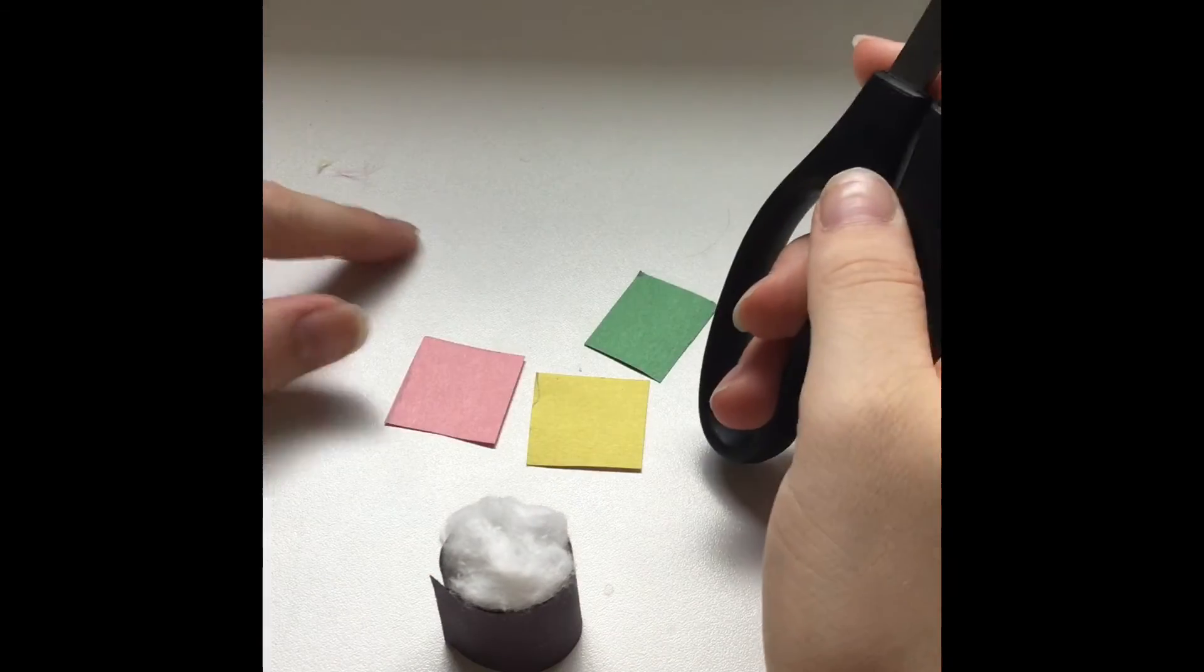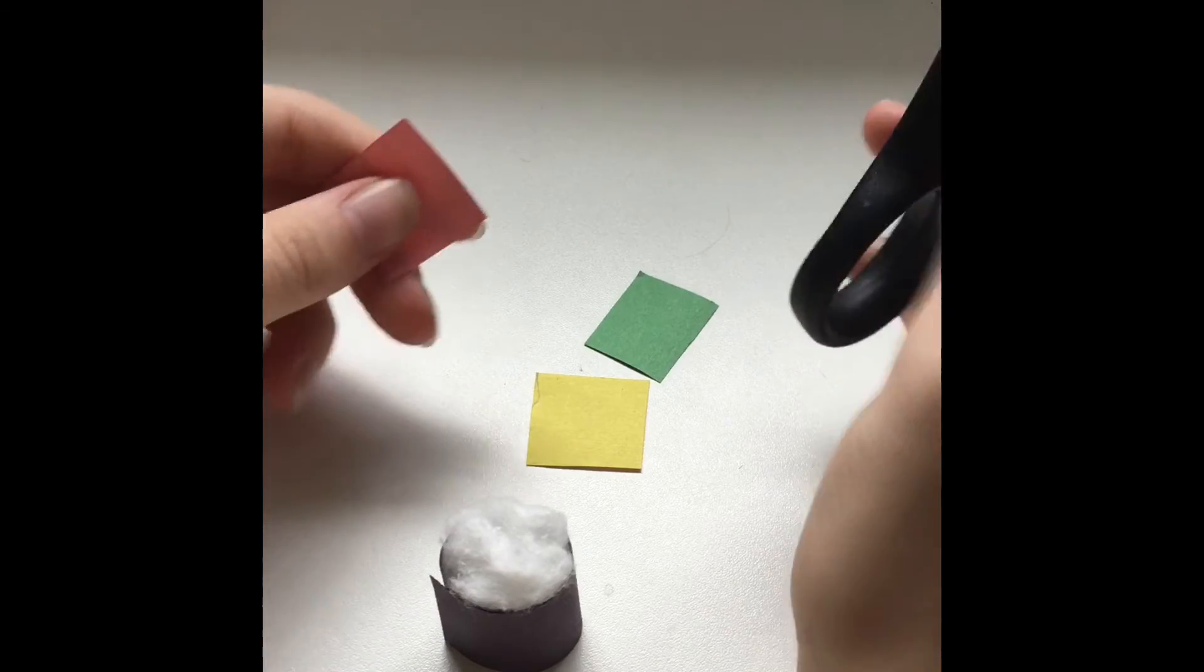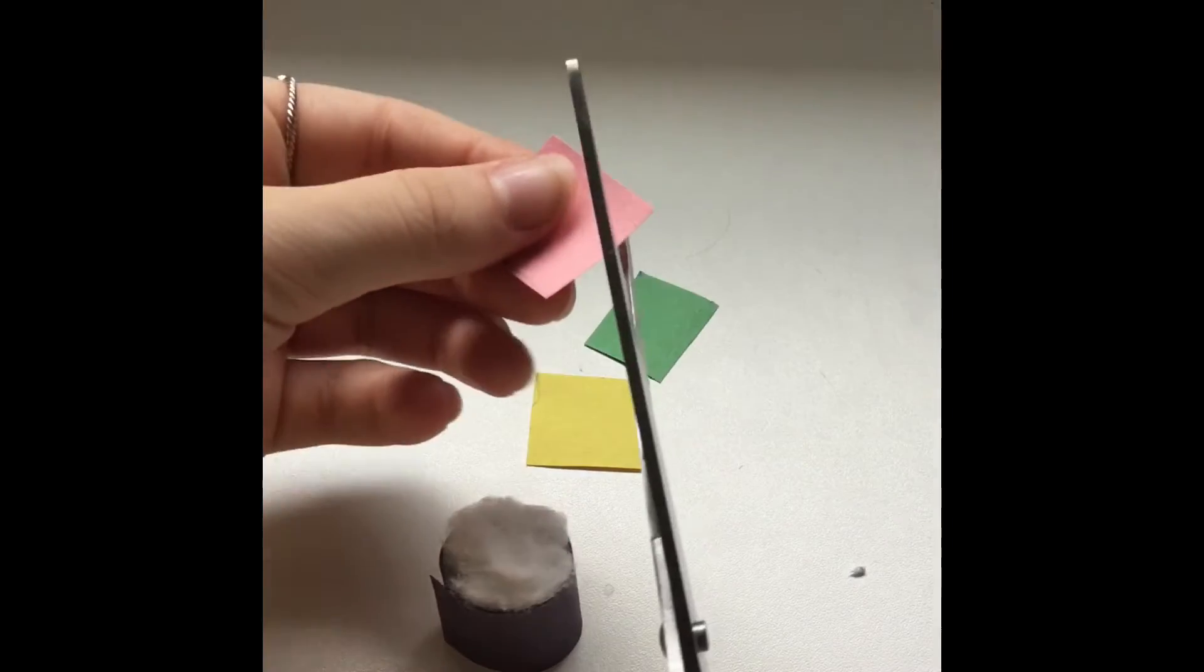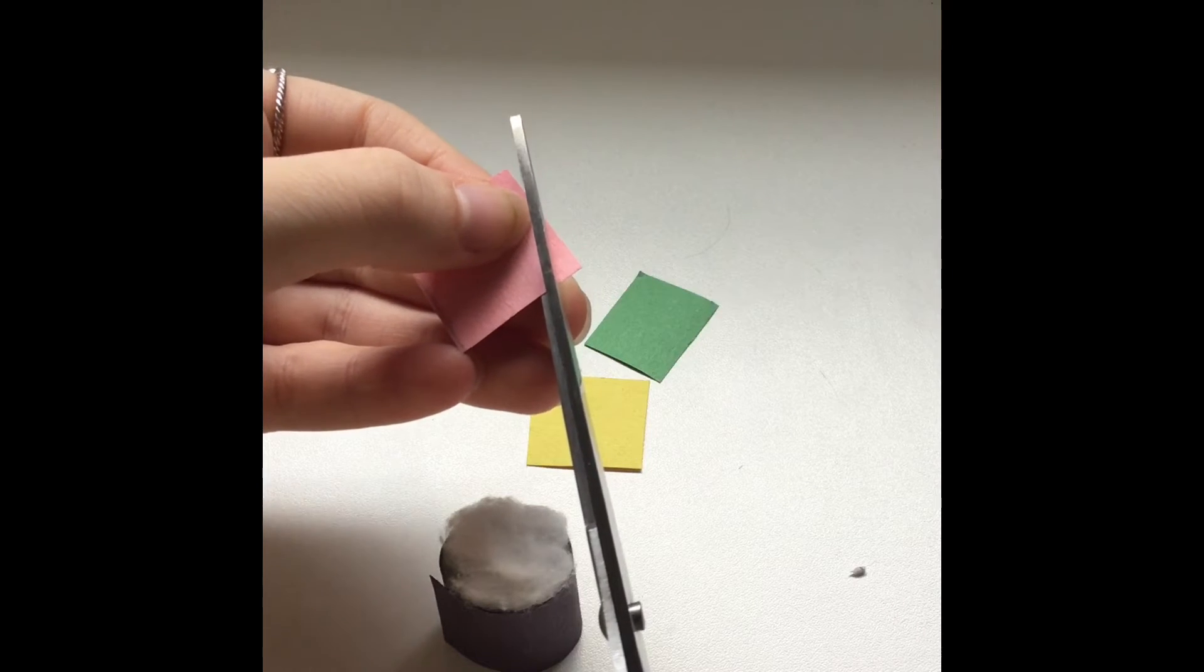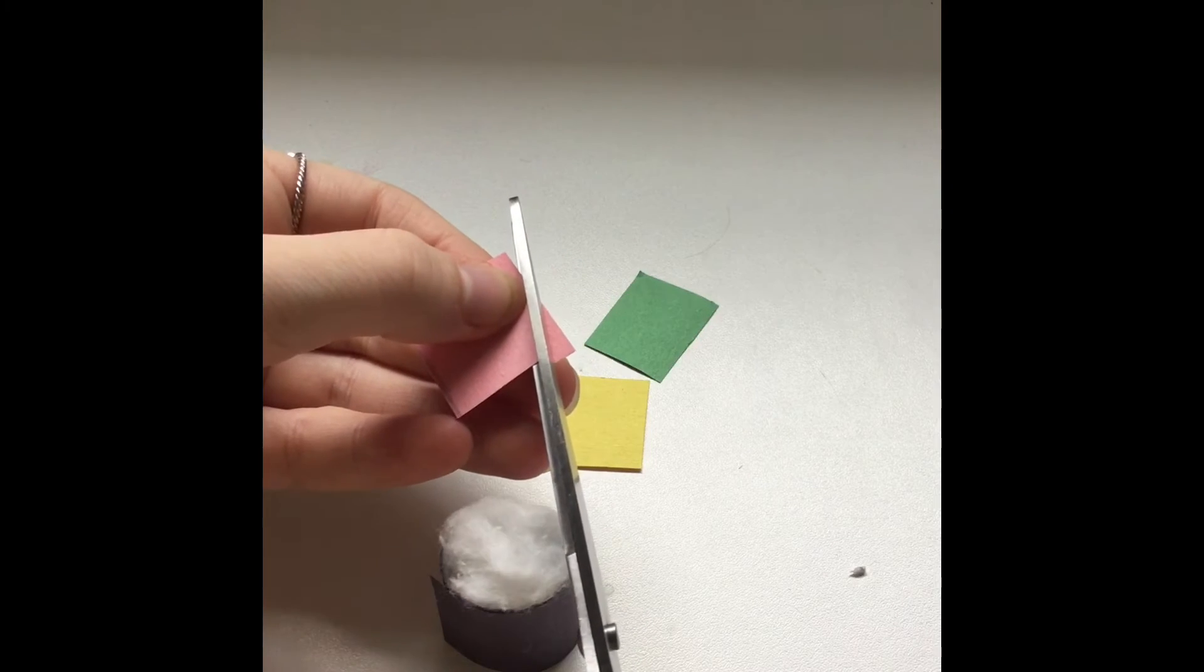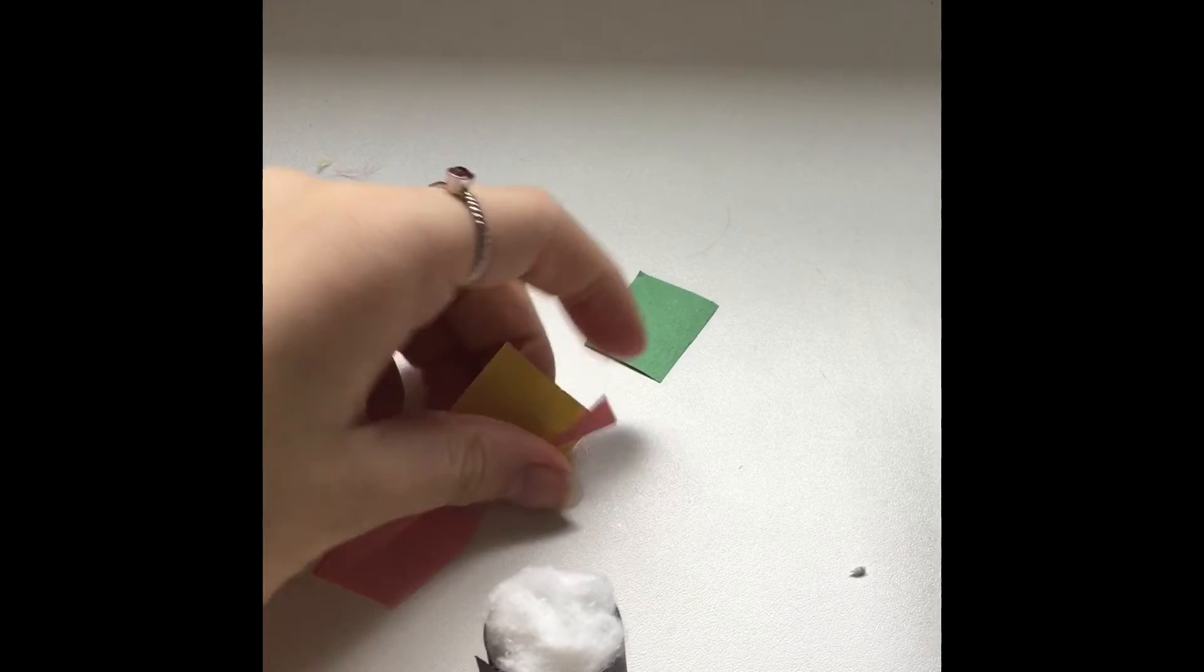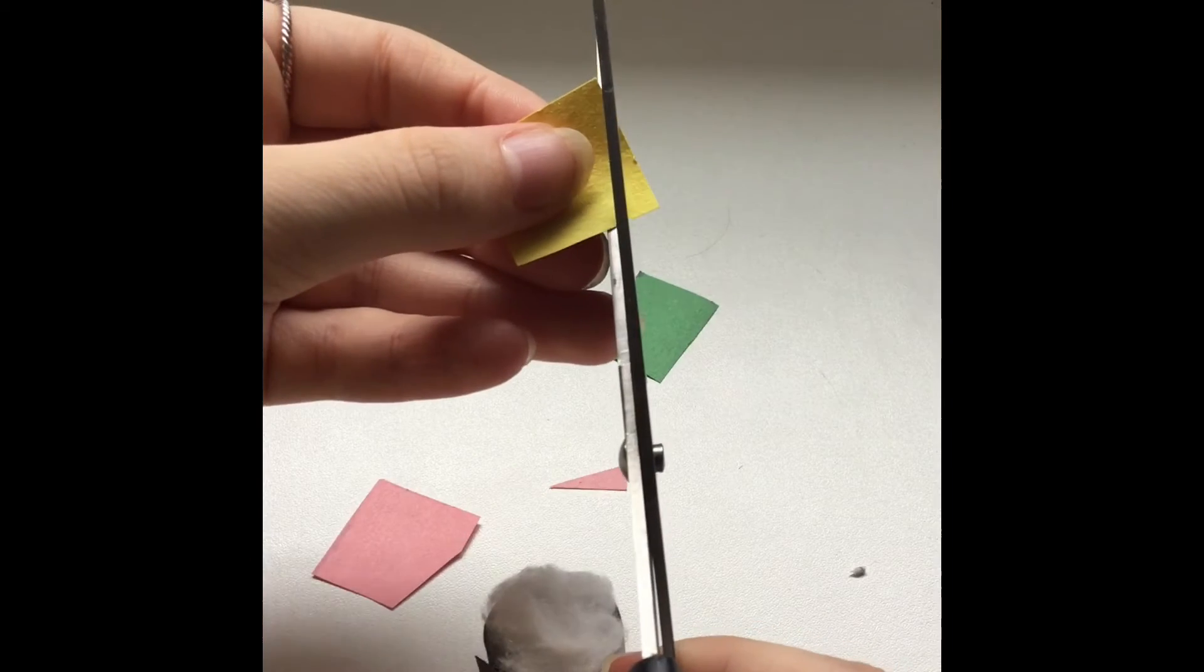So the next step is to take these little squares of paper and cut the corners off so they can look like the little pieces that go inside the sushi. I'm just making them small enough so they fit.